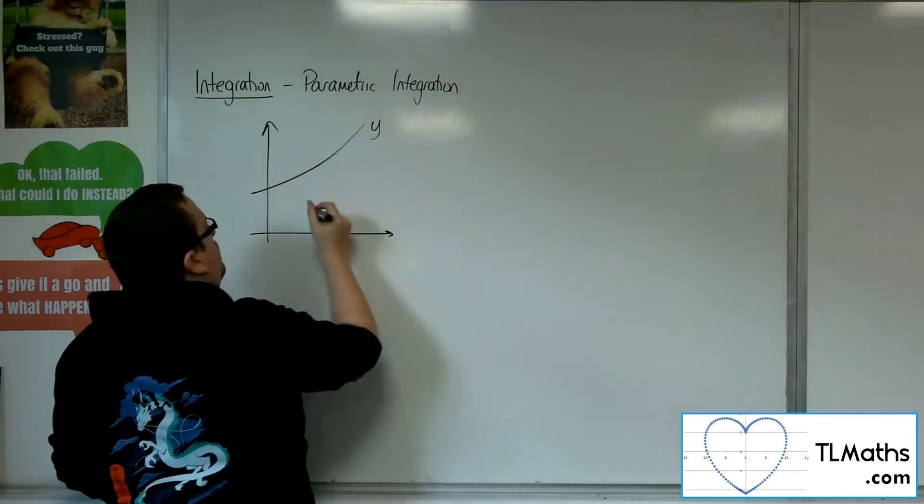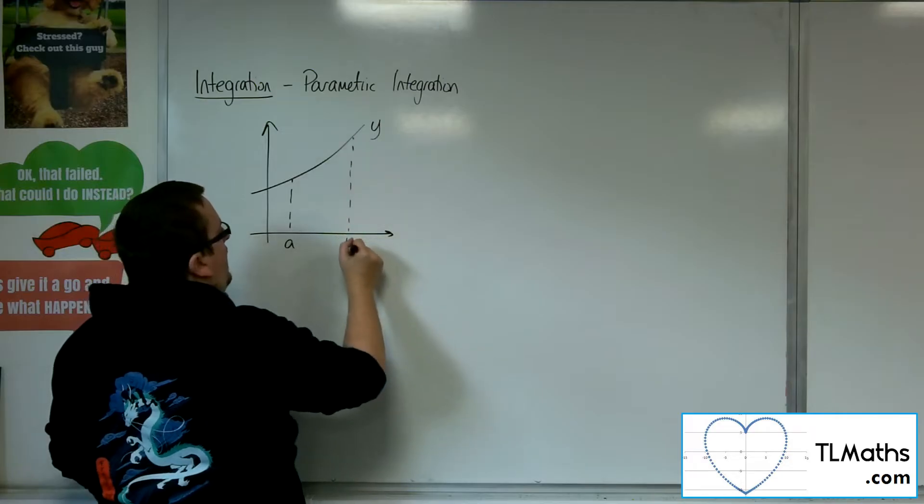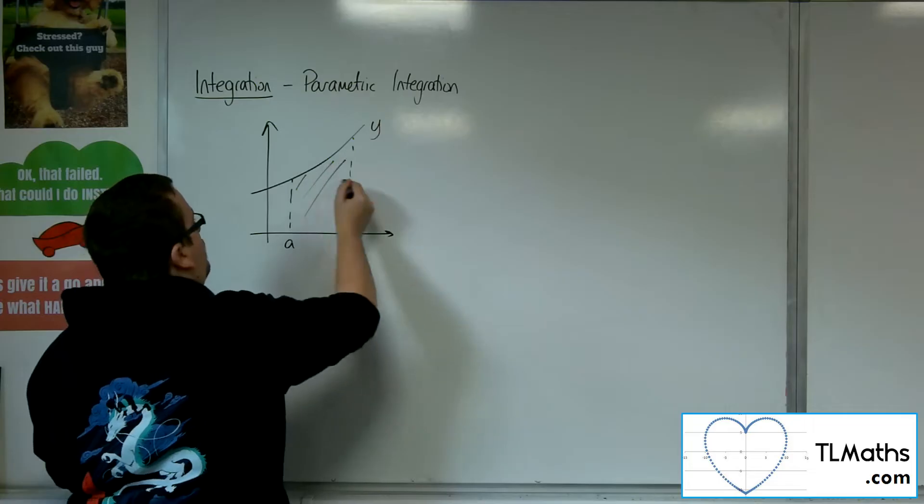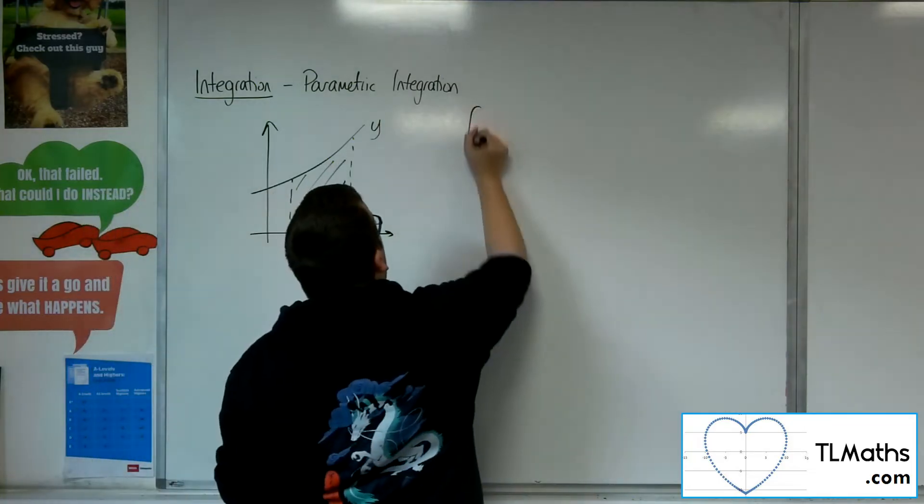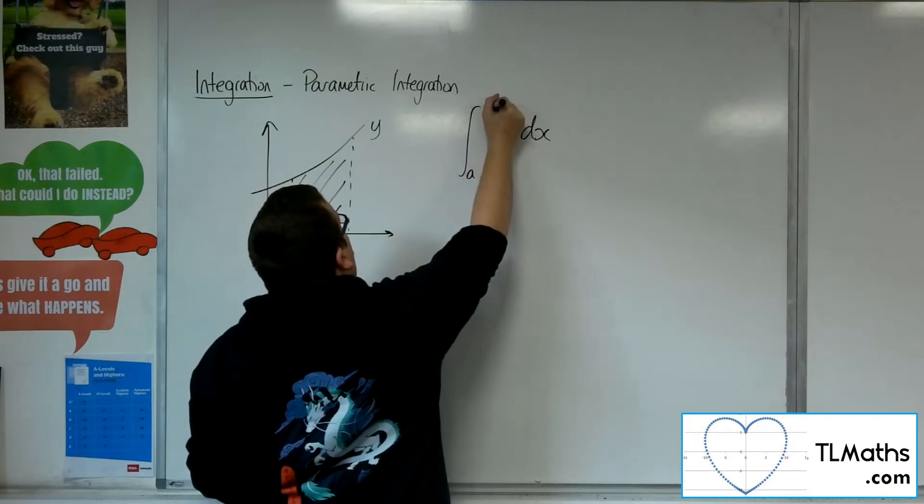So here's your curve y and you'd be integrating between two values, a and b. And what you can then say in order to find that area is that you can integrate y with respect to x between a and b.